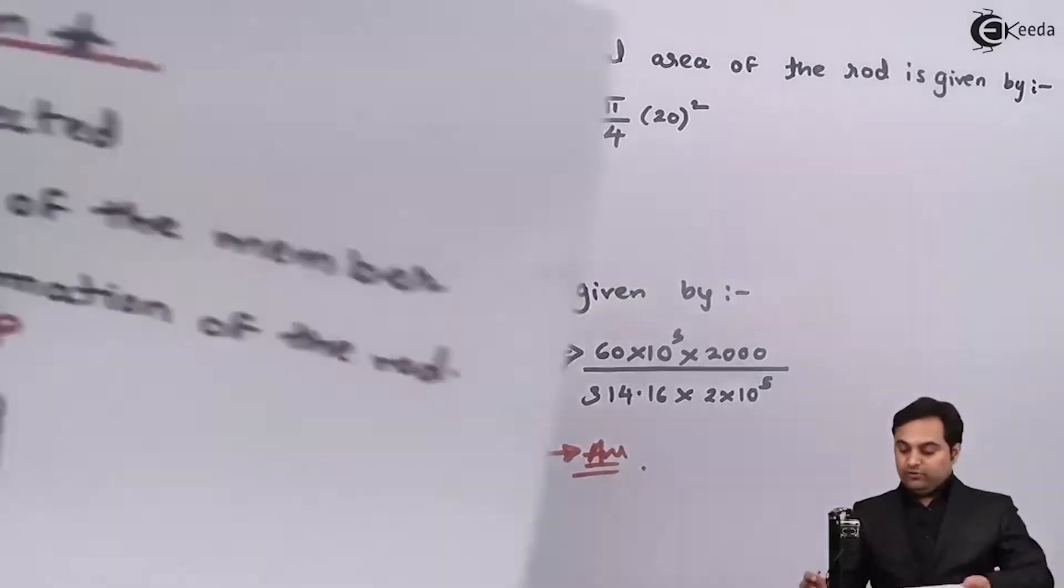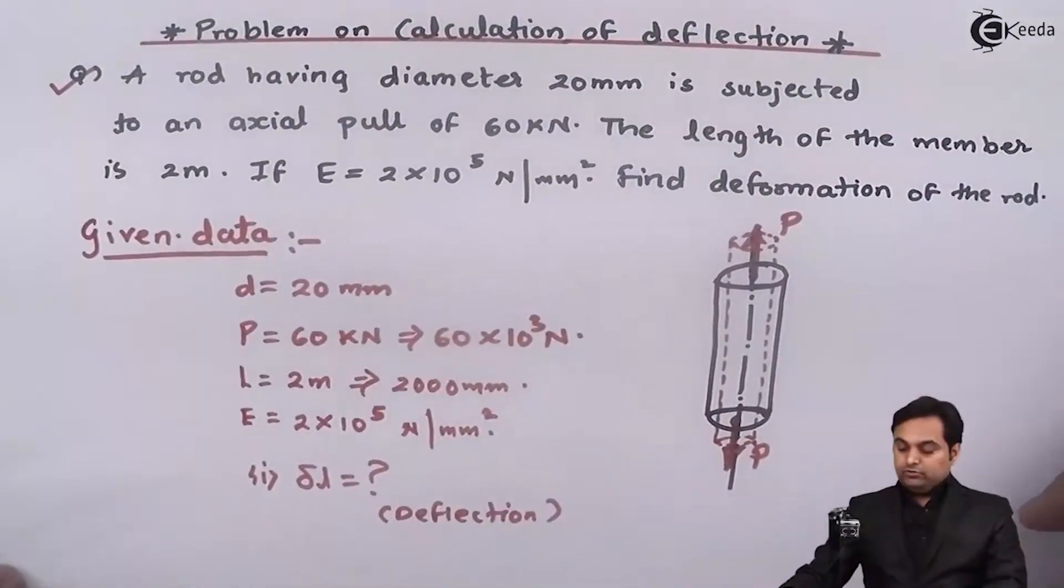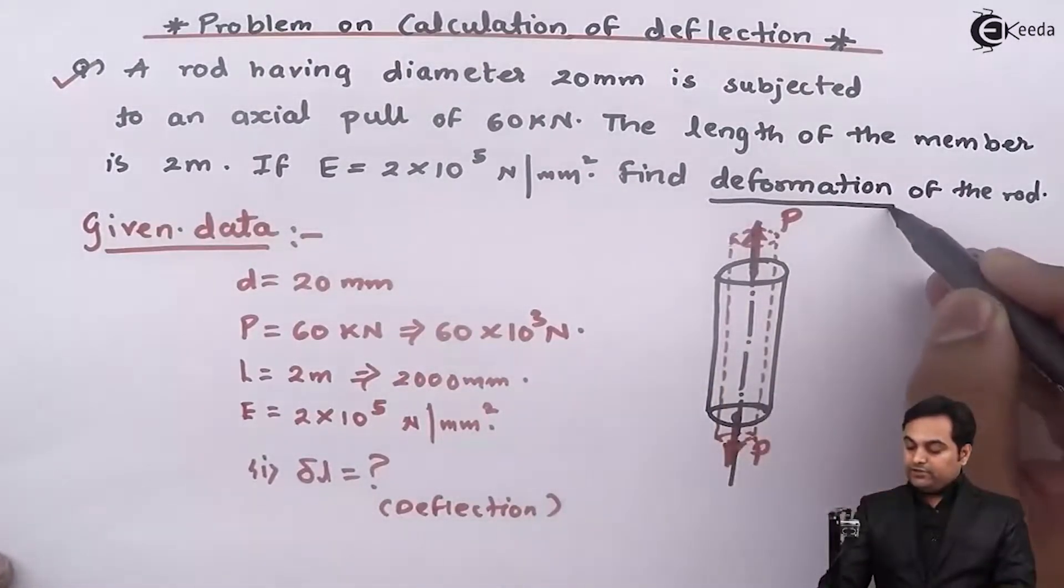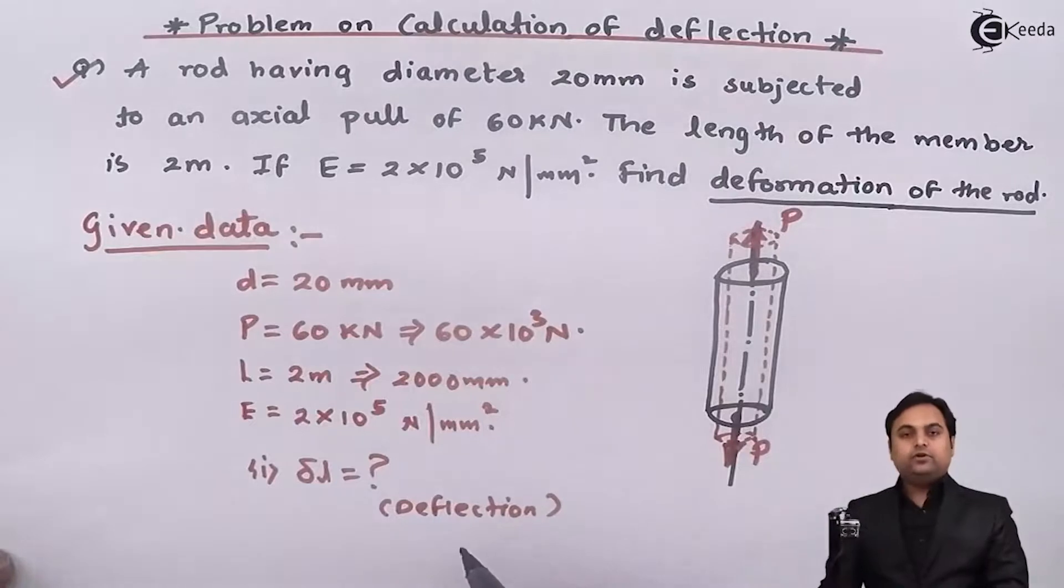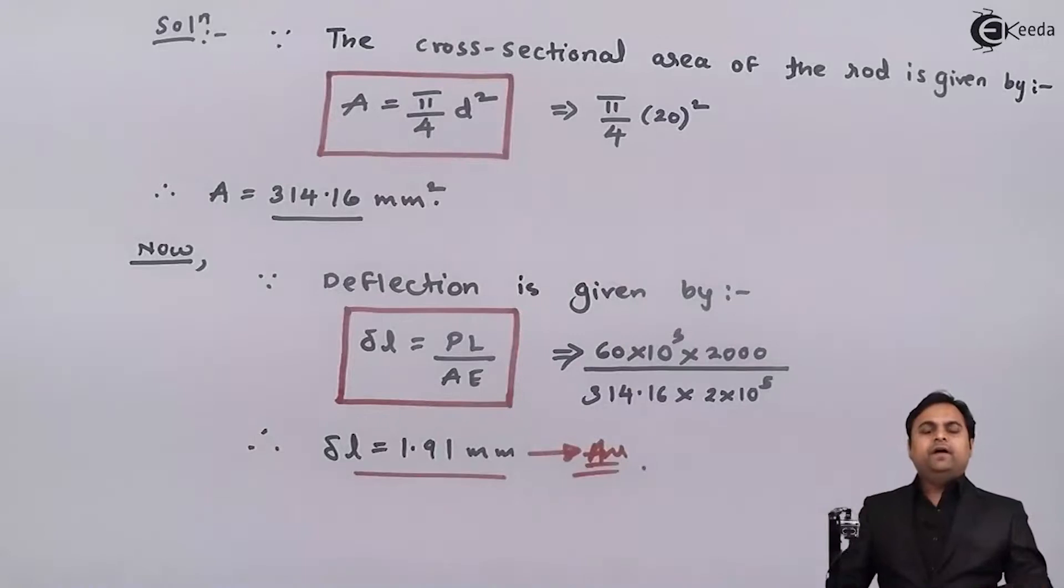So here if we look into the question, they were telling us to calculate the deformation. The deformation of the rod means the deflection of the rod, which we have calculated, and that comes out to be 1.91 mm. And with this we complete the problem.